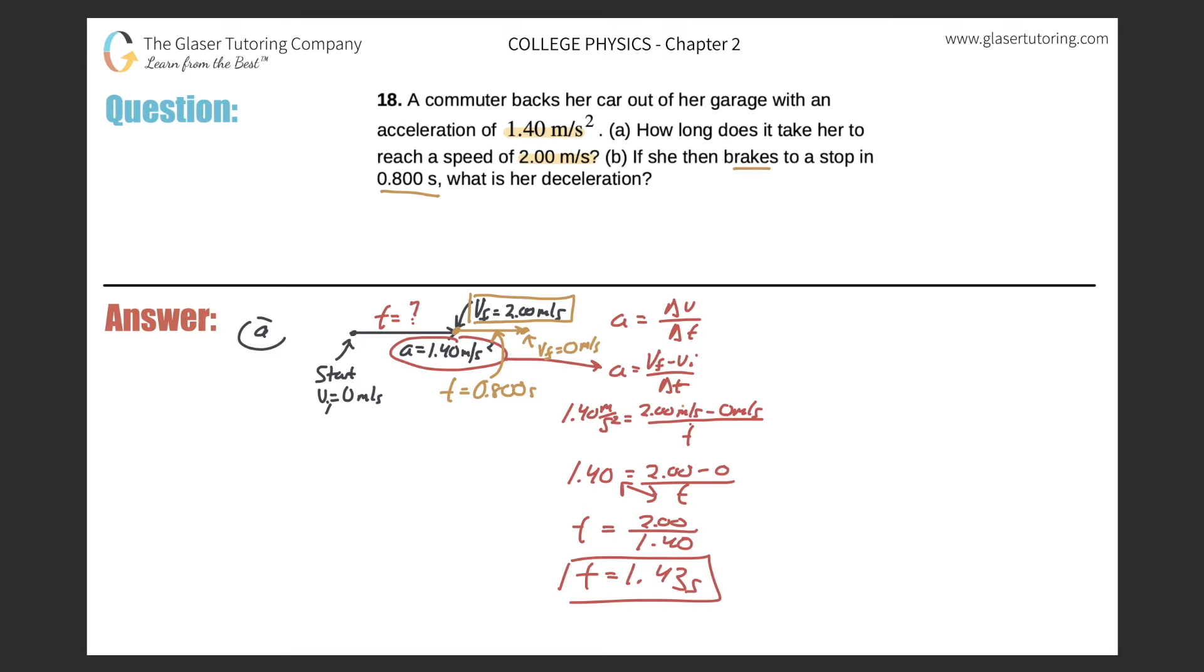Now remember, they're asking us to calculate her deceleration, aka her negative acceleration. So let's use that formula again. So acceleration is equal to change in velocity divided by change in time. So the acceleration is what we're looking for. The velocity can be broken down then into final velocity minus the initial velocity divided by the change in time.